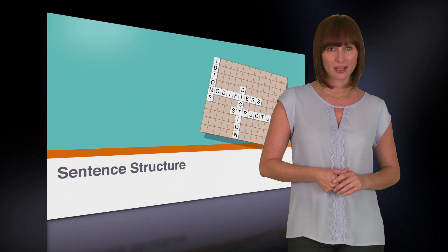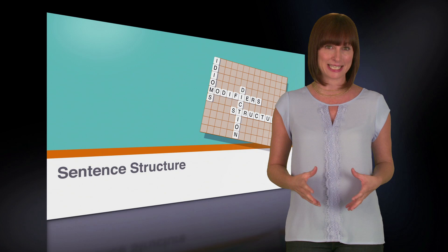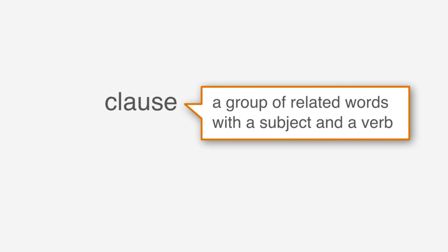Sentences require proper connecting words, punctuation, and only some can stand up on their own. In this lesson, we'll talk about the components of a complete sentence. Let's start by reviewing clauses. A clause is a group of related words with a subject and a verb. You know what a clause is — this isn't new information. But do you remember the two different types of clauses?